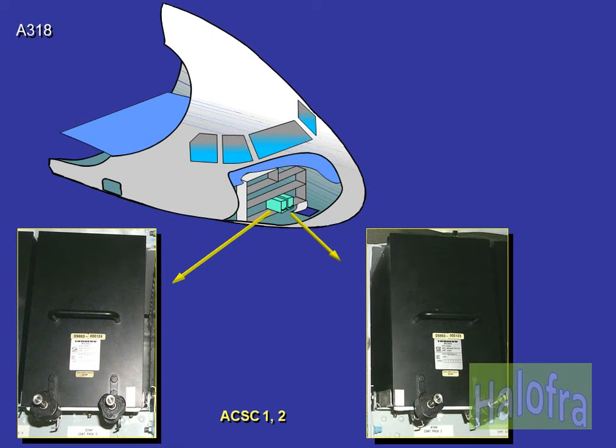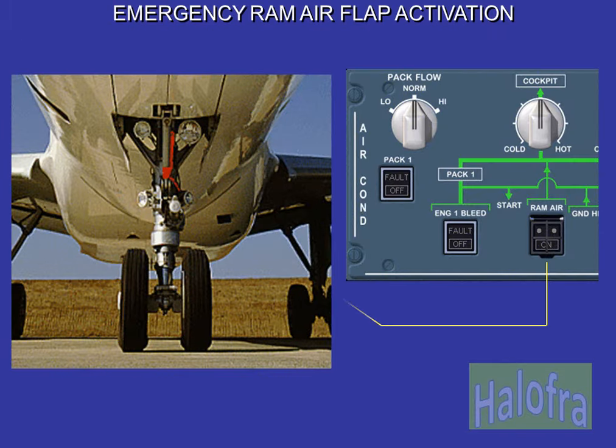Two identical air conditioning system controllers, ACSC, monitor and control the system as follows: zone temperature control, pack flow and temperature control, system and component monitoring, and communication with other aircraft systems. These functions are divided between both ACSCs, with ACSC 1 controlling the flight deck and pack 1, and ACSC 2 controlling the cabin (forward and aft) and pack 2. When the RAM air push button switch is pressed in, the RAM air flap is opened.